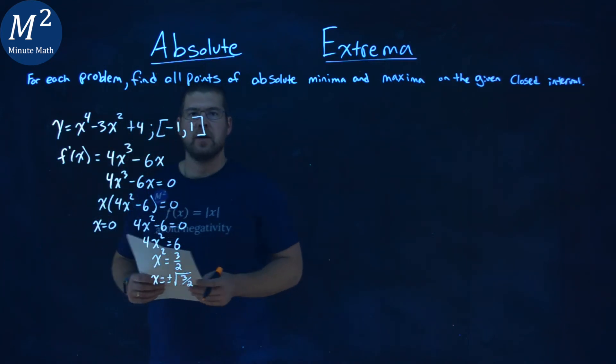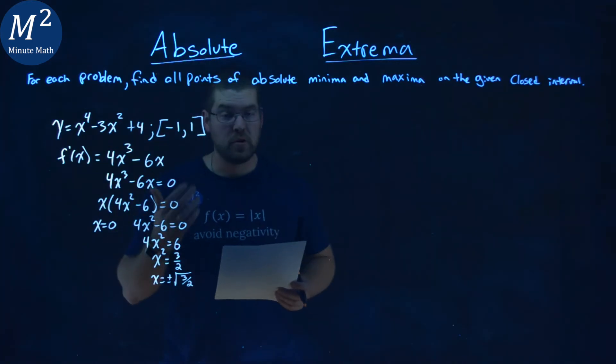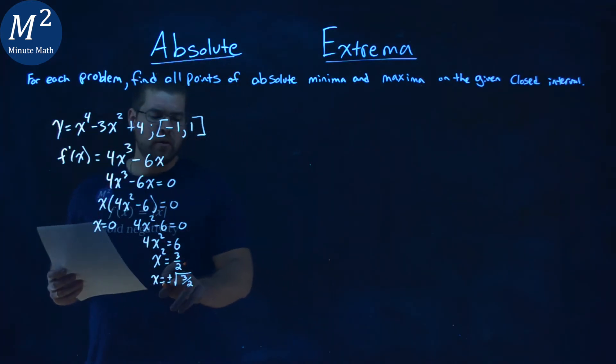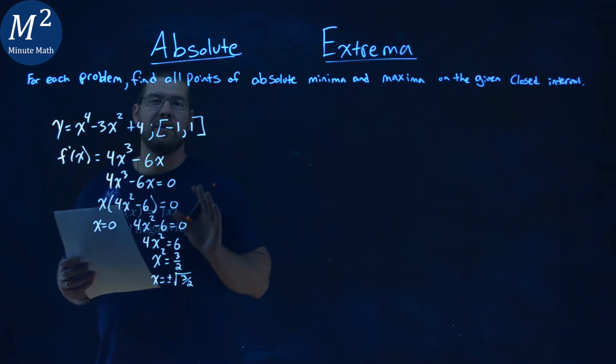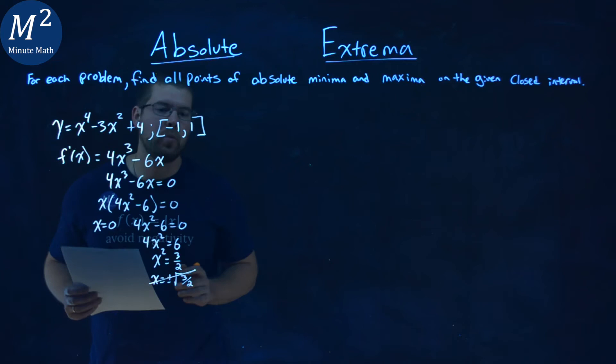Now, one thing we want to check with these critical values that we found: are they within our domain, our interval here? Plus or minus the square root of 3 halves are just outside of this domain, so we don't have to worry about them.